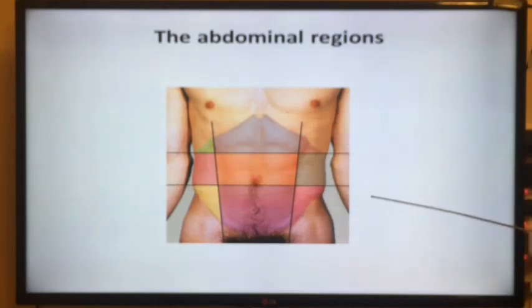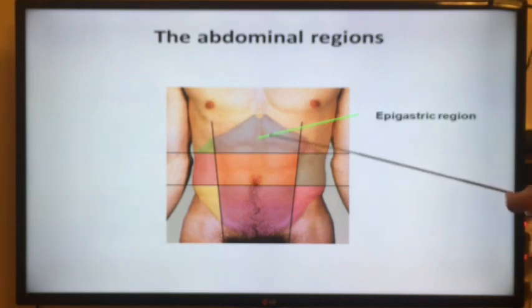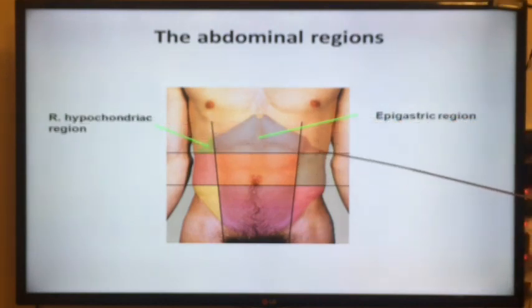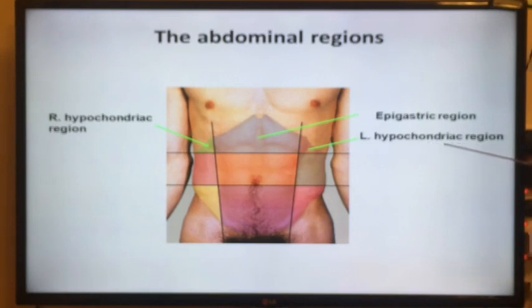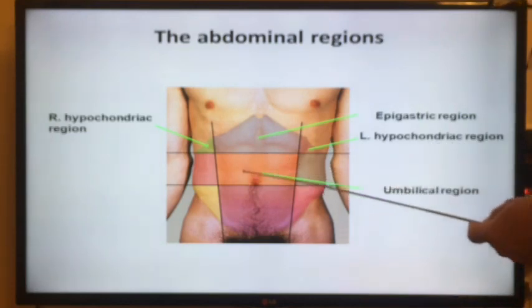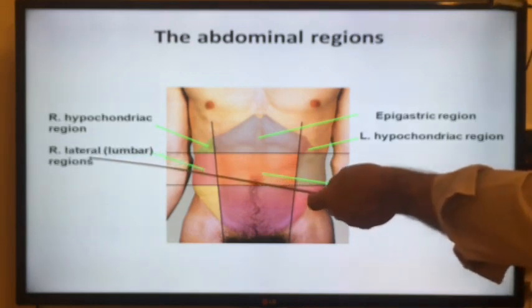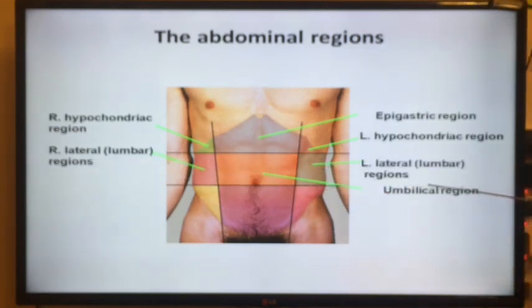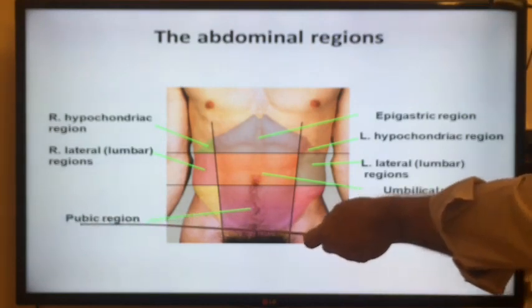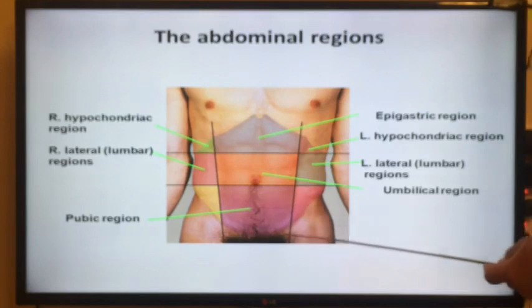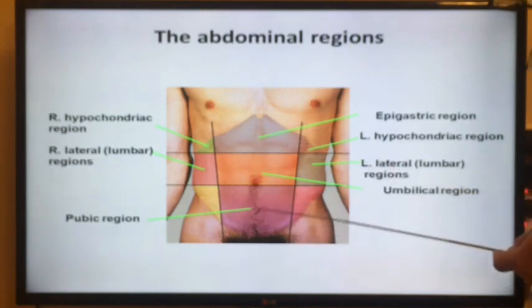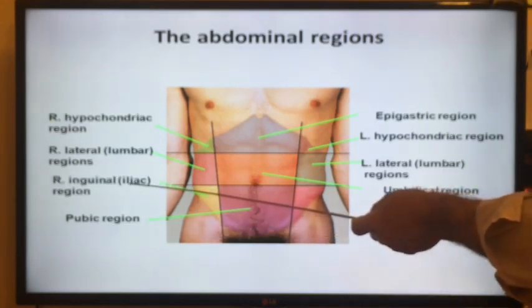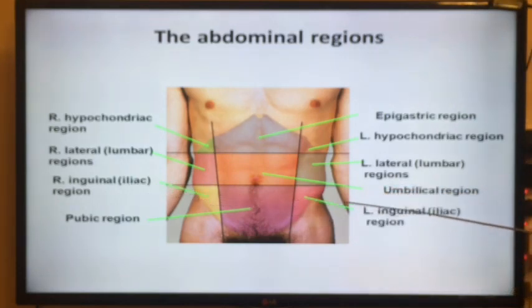These nine regions are: the epigastric region in the center top; the right hypochondrium and the left hypochondrium on either side; the umbilical region in the middle; the right lumbar or lateral region and the left lumbar or lateral region; the pubic region, sometimes called the hypogastric region, at the bottom center; and the right iliac or inguinal region and the left iliac or inguinal region.